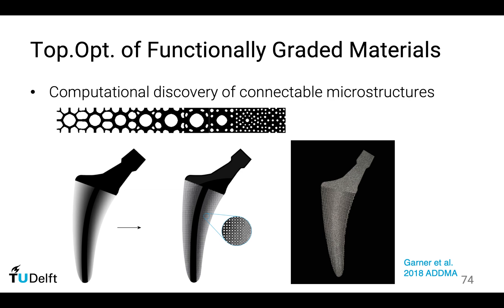This is in contrast to previous research on the design of microstructures, where the microstructures are optimized independently. So even though each microstructure is optimized, if you put them together they don't connect very well. The innovative part of the project by Eric Garner is to optimize these microstructures at the same time, so this connectivity is ensured. On the right-hand side is an implant fabricated with powder.